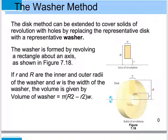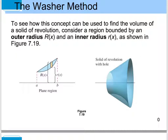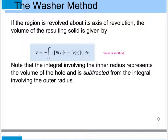When doing these problems, think of a washer as the difference of two disks. The outer radius is represented by capital R and the inner radius by lowercase r. The volume formula using the washer method is: volume = π times the integral from a to b of (R² − r²) dx, where you subtract the inner radius squared from the outer radius squared.